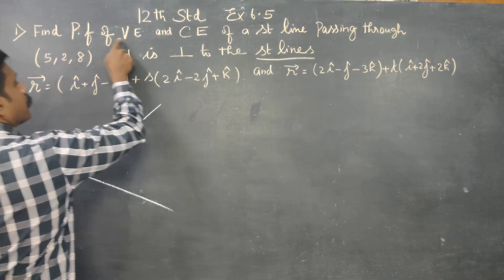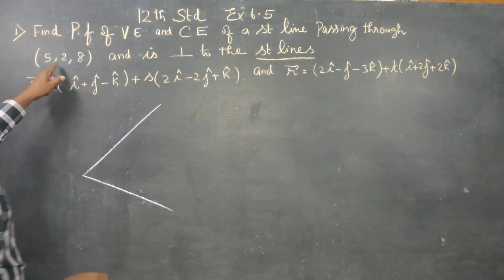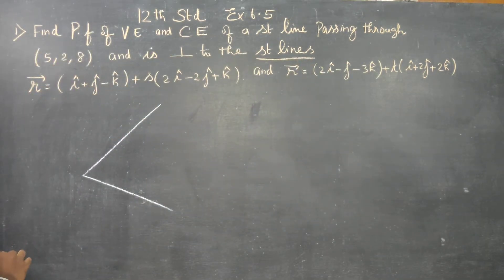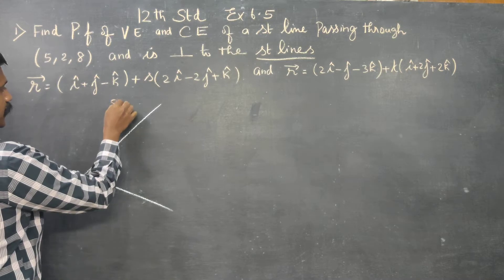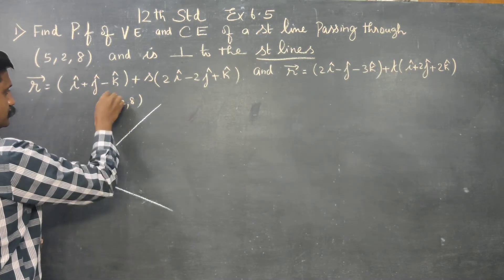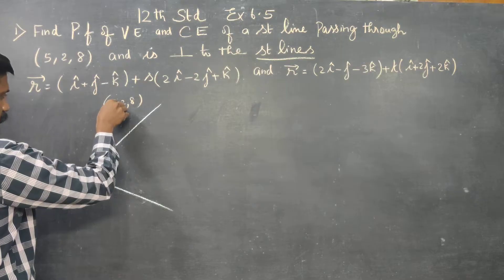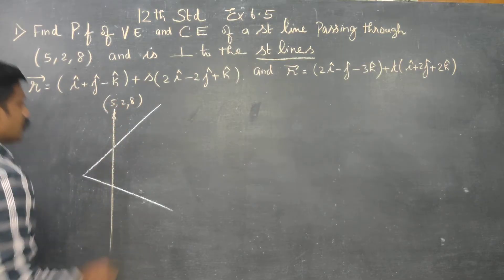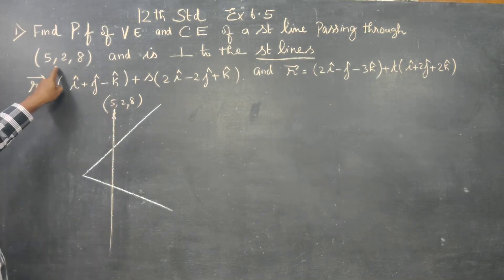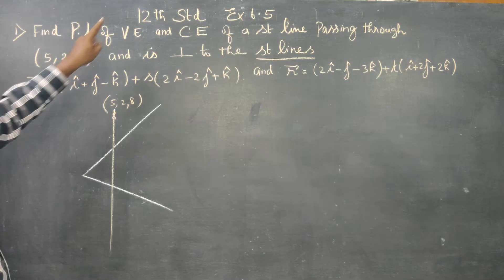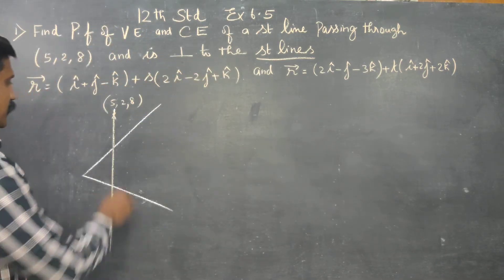Find the parametric form of vector equation passing through (5, 2, 8). Here we go — the point is (5, 2, 8). For the line-based equation, this line is perpendicular to the given straight lines. If you want to find the equation of a straight line, you need minimum two pieces of information: one point and one parallel direction vector.